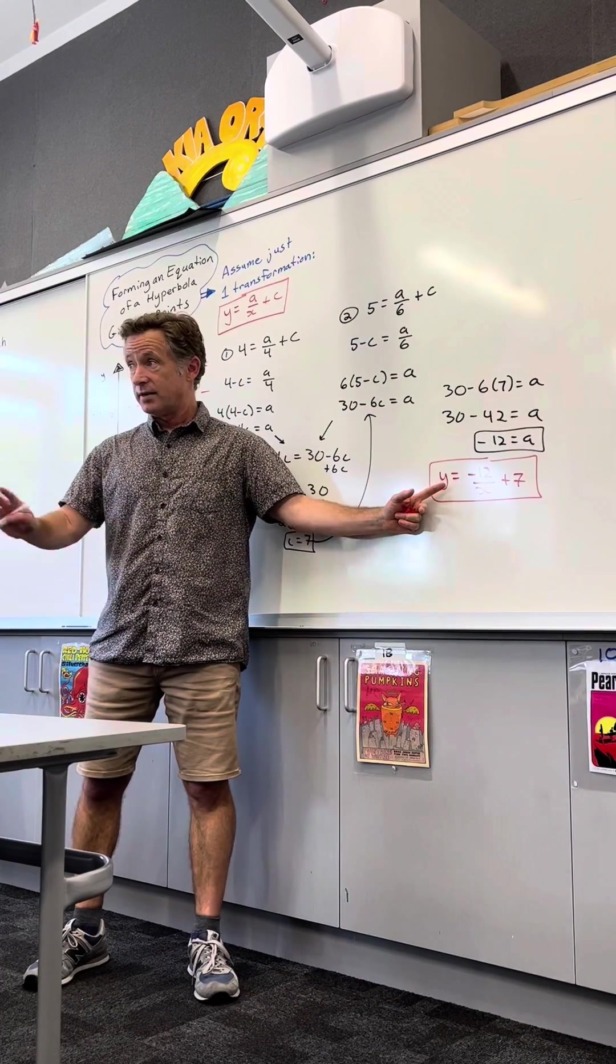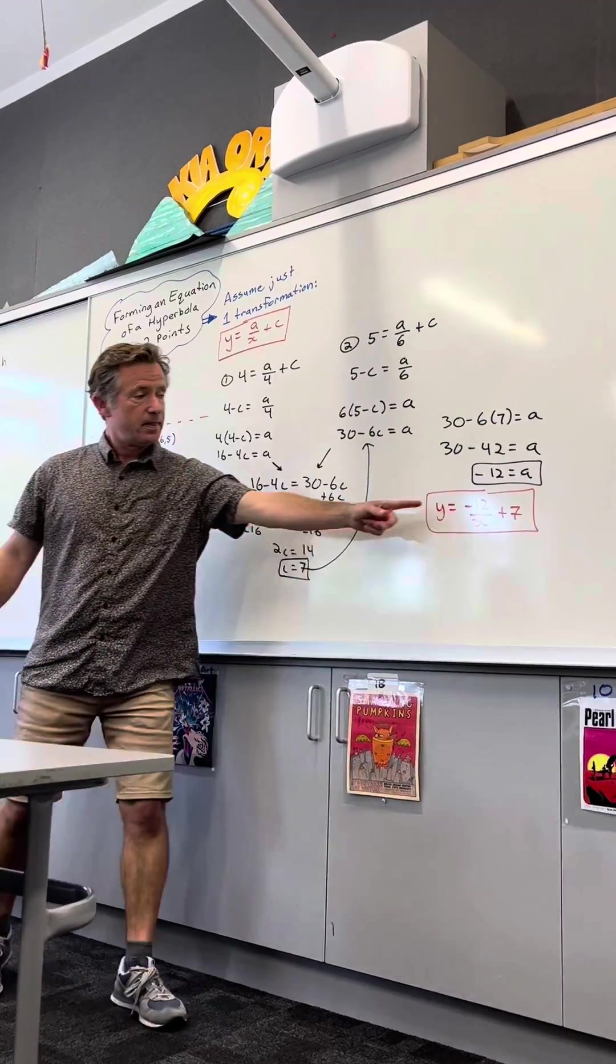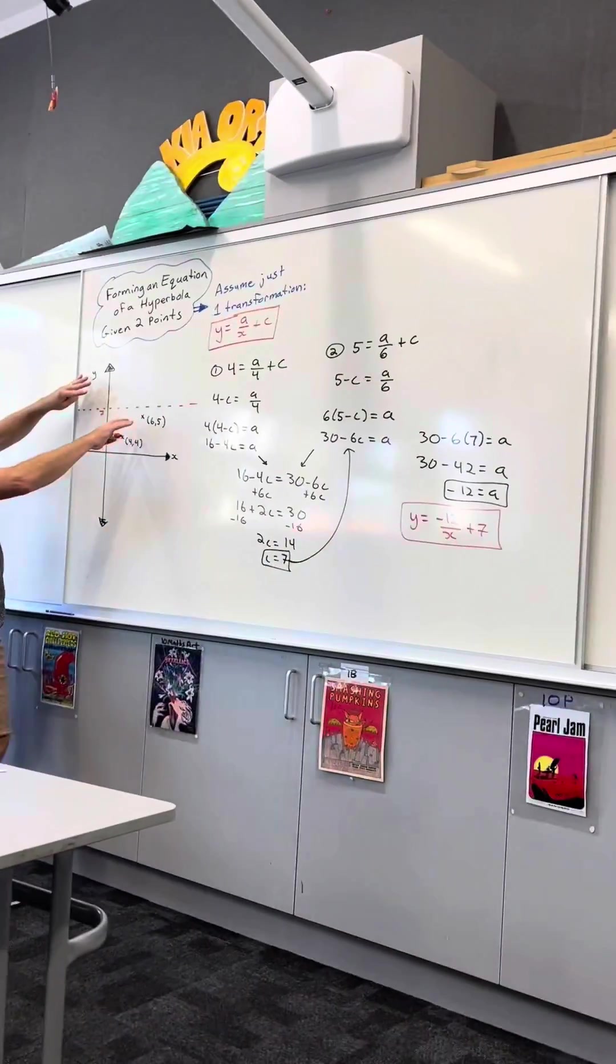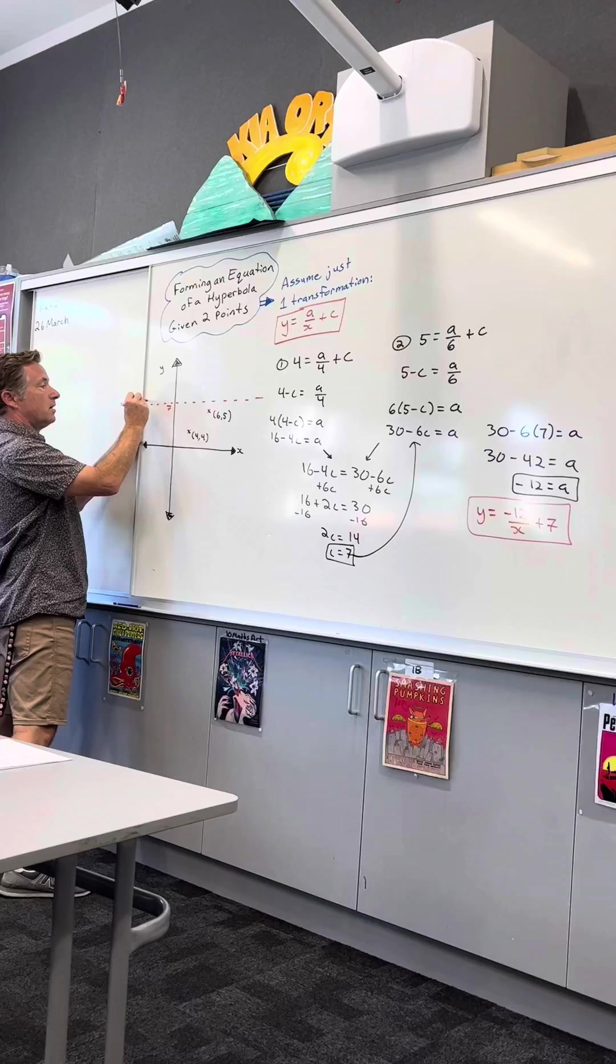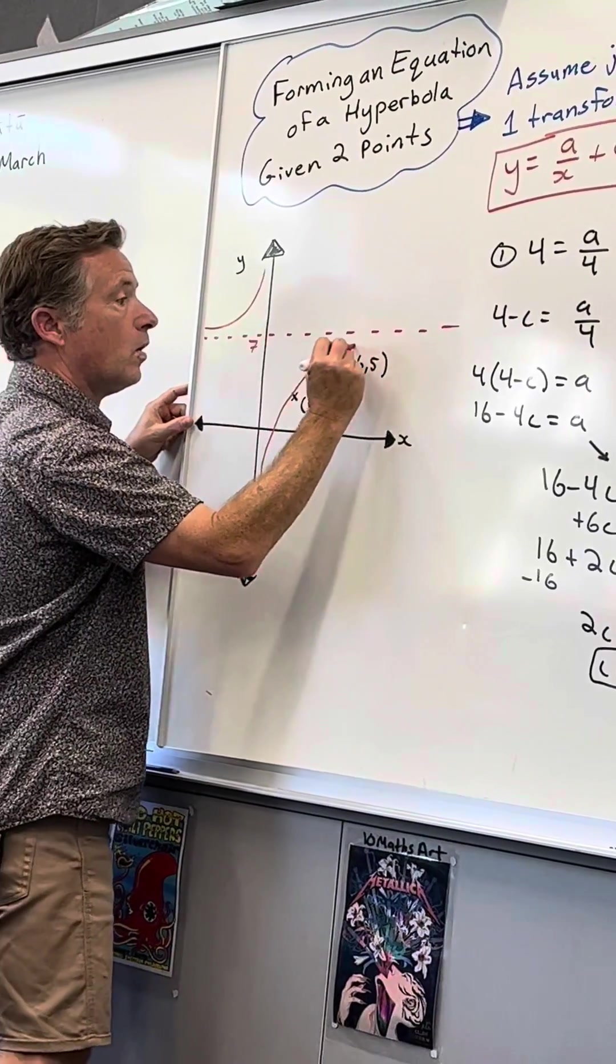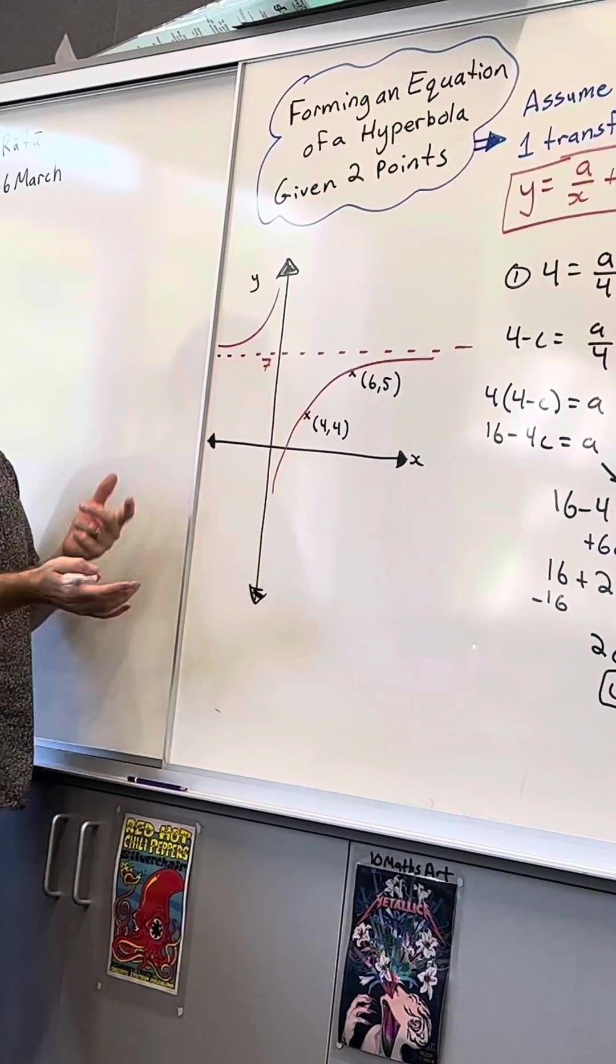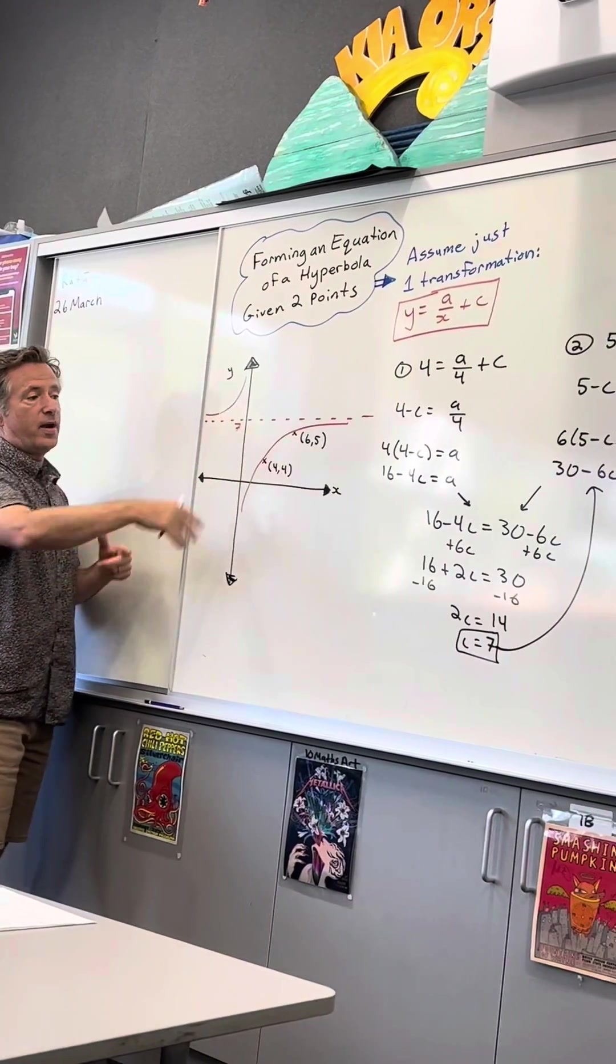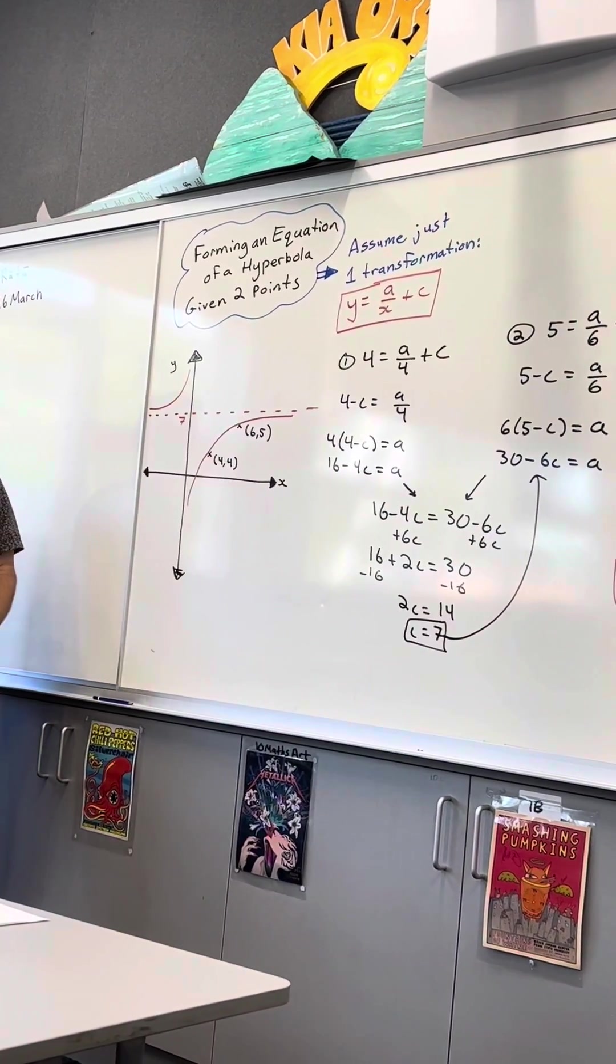But to see what it looks like, a is negative. So that means it's going to be in these two quadrants. It's going to be like this, and it's going to be like that. And I did not expect that. I expected this curve to kind of go the other way, but it's not.